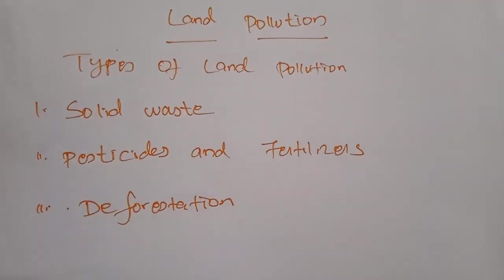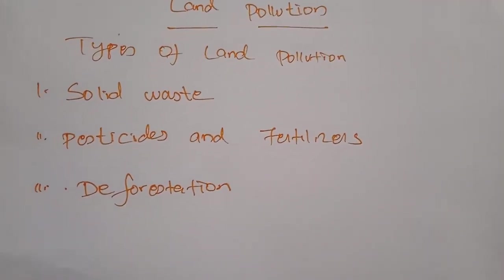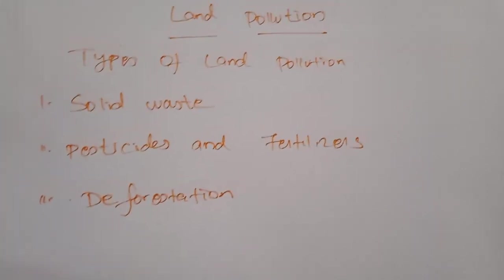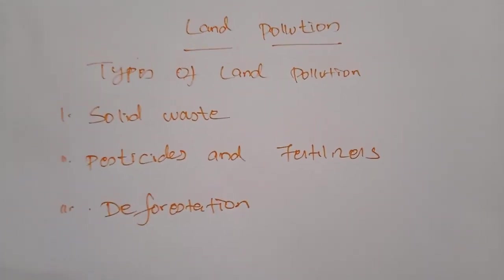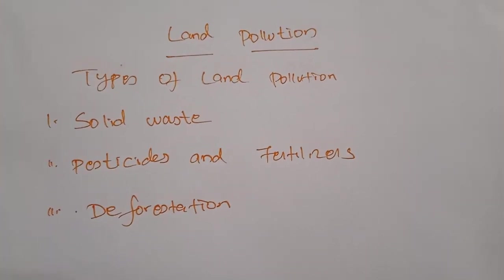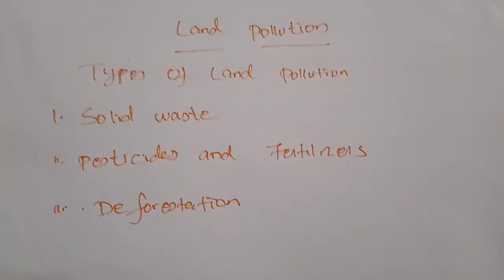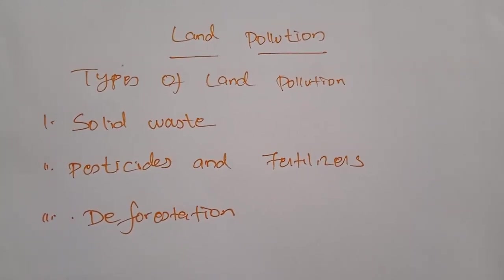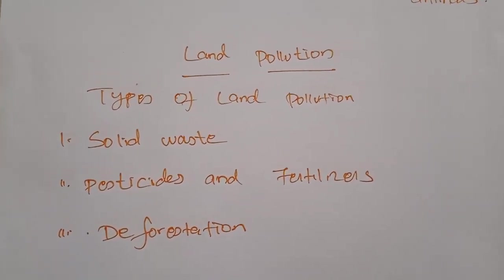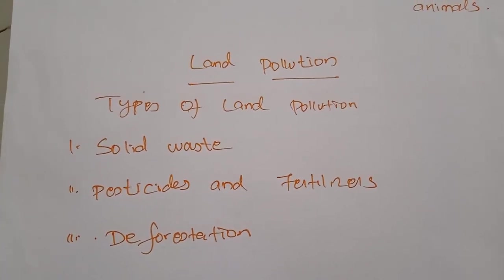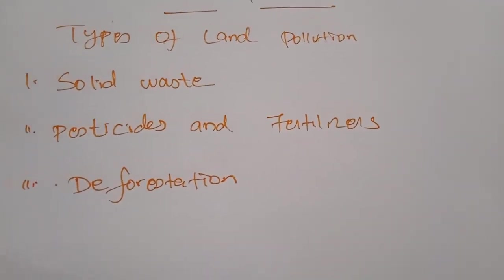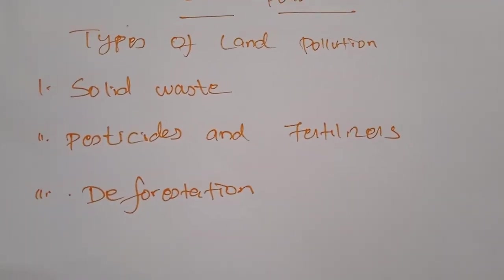Next, land pollution. Land pollution is defined as the degradation of land because of the disposal of waste on the land. The types of land pollution — first, solid waste. Solid waste includes all kinds of rubbish like paper, plastic, containers, bottles, cans, food waste, broken electronic goods, municipal waste, and hospital waste. Because of all these types of solid waste, when land gets polluted it is considered solid waste pollution.